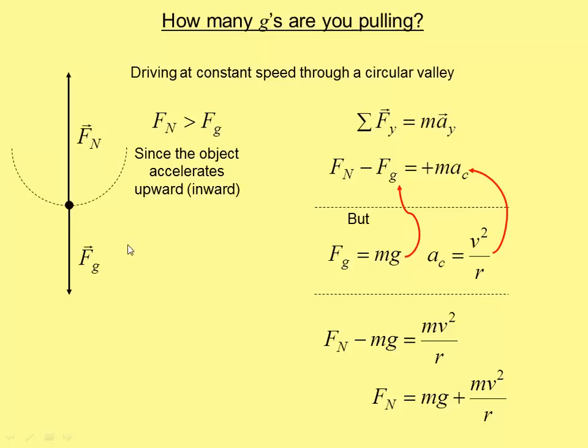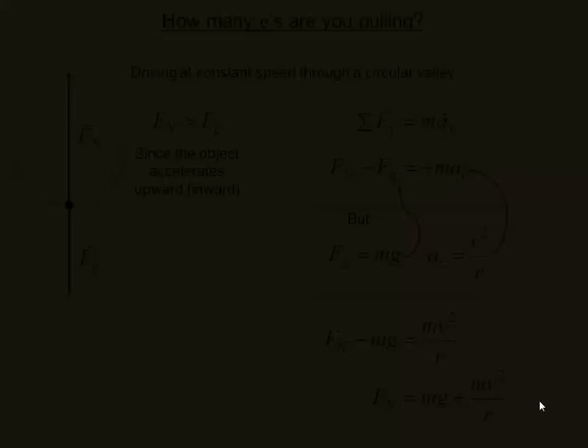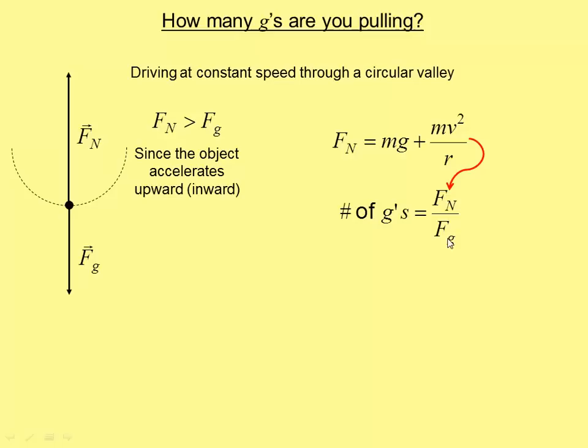Hopefully, after doing all those MOPs, you see why this is. Because you have to have, your normal force has to be bigger than gravity, and it's bigger by the net force, which is m*v²/r. Plugging that into our number of g's equation, and putting in that F_g again is mg, we get this. Notice here, there are m's in each one of these.